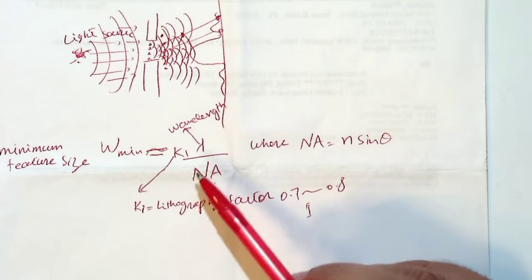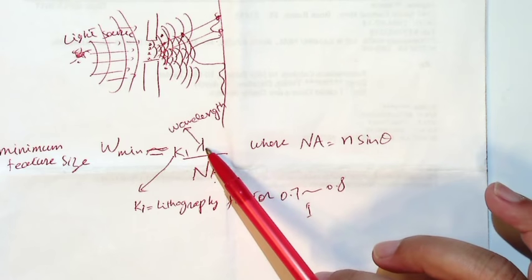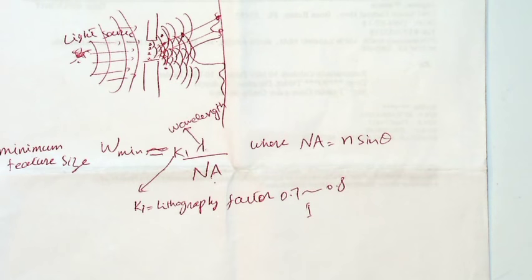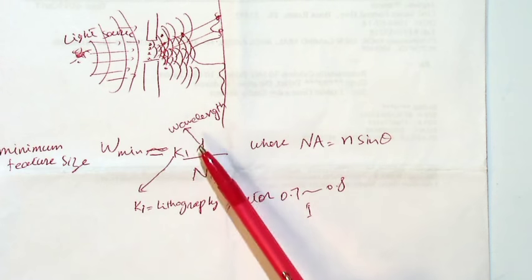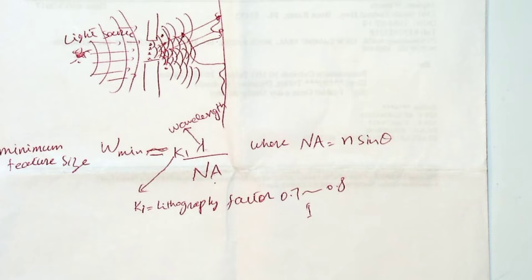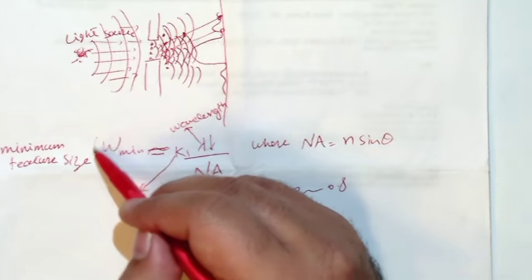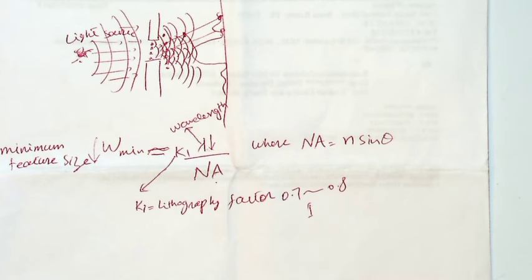What I'm most interested in is lambda. Based on this equation, if you use a light source with a smaller wavelength, you get a smaller minimum feature size, meaning better resolution. Better resolution means smaller features. By decreasing lambda, you can achieve a smaller minimum feature size. That's why there is a trend toward using light sources with smaller and smaller wavelengths, or higher frequencies.